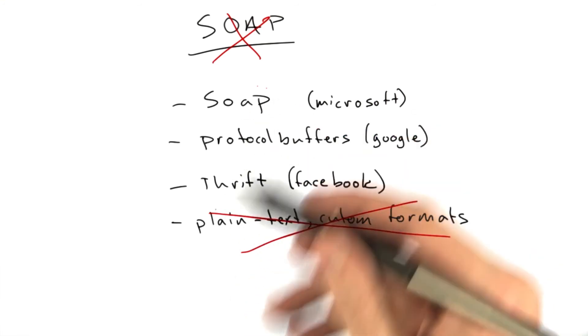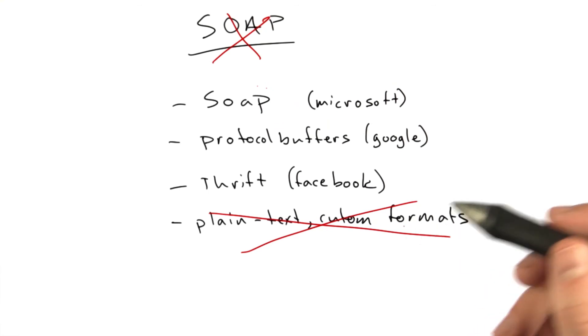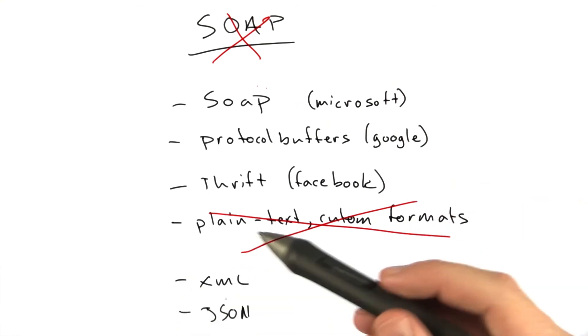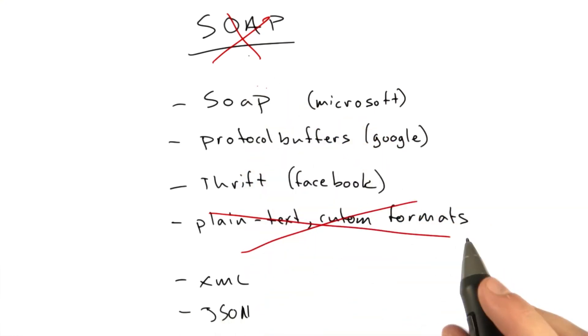Because JSON and Thrift and protocol buffers and SOAP, you can find implementations of these in almost any language. We mentioned XML and JSON. Those are also in this list. Use something that already exists. It'll save everybody a lot of time. I probably wouldn't use SOAP.